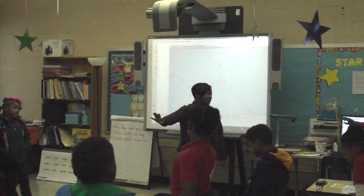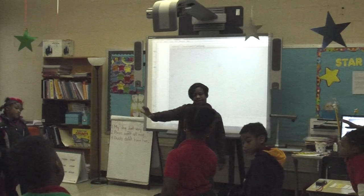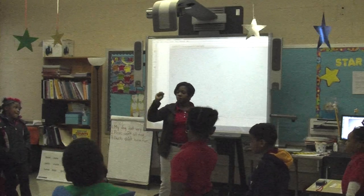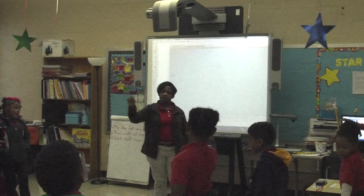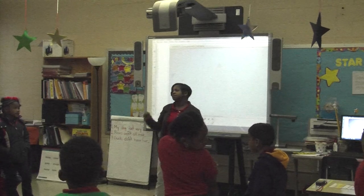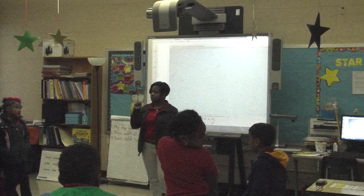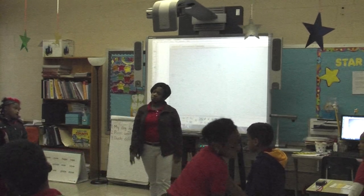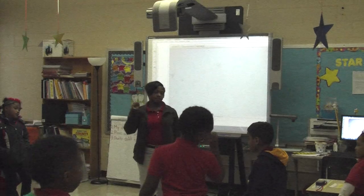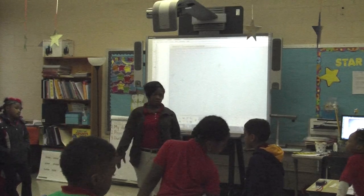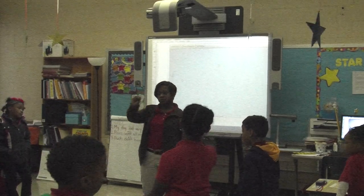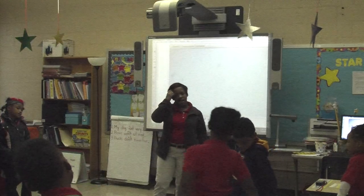All right, let's start at twenty. Let's count backwards by twos. Ready? Let's go. Twenty, eighteen, sixteen, fourteen, twelve, ten, eight, six, four, two, zero. Excellent job.